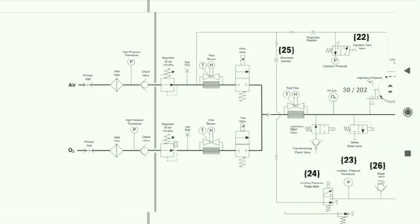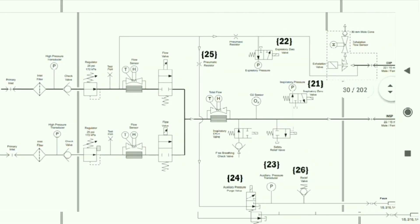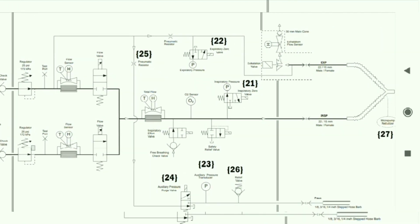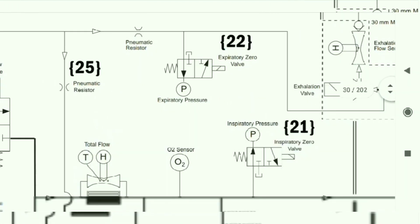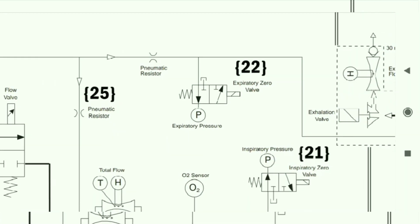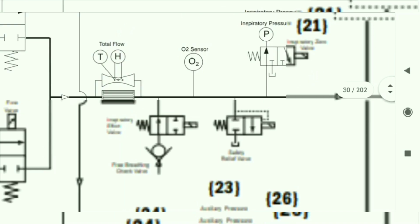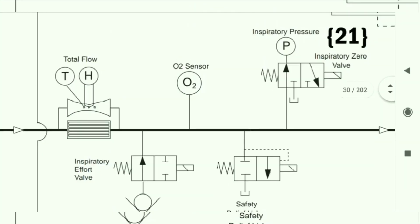Then the flow goes to pneumatic resistors — there are pneumatic resistors in both lines — and then there is an expiratory valve for expiratory pressure. There is also an O2 sensor inside which measures the amount of O2. By sensing and controlling this, we can change the FiO2 — delivering higher or lower O2 concentration as needed.